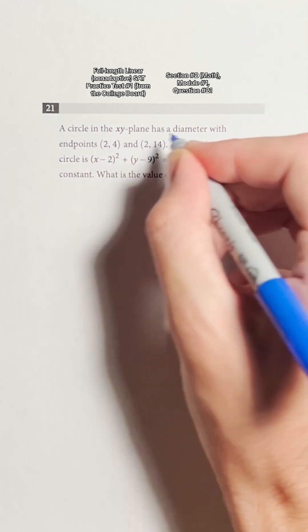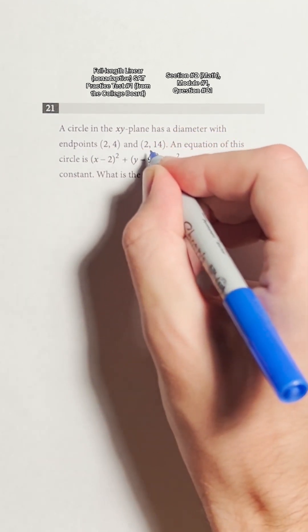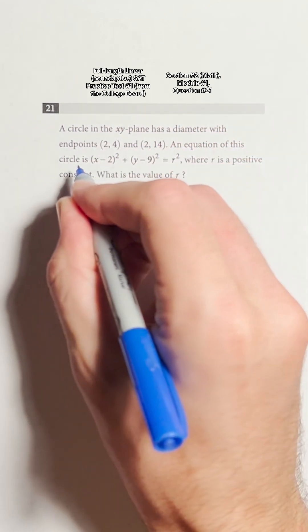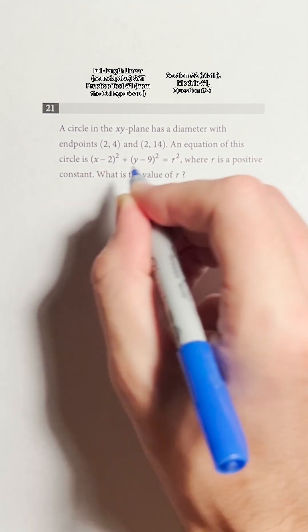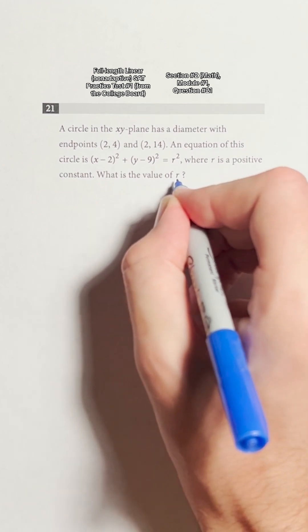A circle in the xy plane has a diameter with endpoints (2,4) and (2,14). An equation of this circle is (x - 2)² + (y - 9)² = r² where r is a positive constant. What is the value of r?